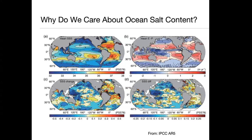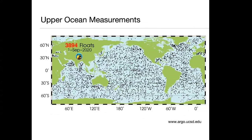We can use salinity information to infer information about the global water cycle and its changes, which is very difficult to measure directly. Also, both the heat content change and salt content change contribute to sea level rise, so they are quite important in the climate change sense. The most reliable way to get information about ocean heat content change or salt content change is in-situ measurements.